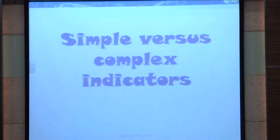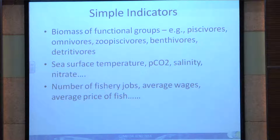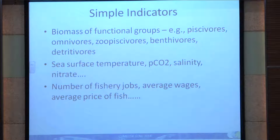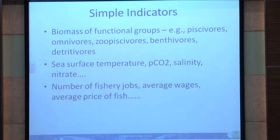There is a wide variation in indicators, from very simple to extremely complex. Simple ones include biomass of functional groups in the system — like piscivores, benthivores, or detritivores — which tell you much about the structure of the fish community. From the physical world, sea surface temperature is a simple indicator, as are dissolved carbon, salinity, nitrate, et cetera. Number of fisheries jobs is another simple indicator. These are clear to others in what they mean and don't require much interpretation.